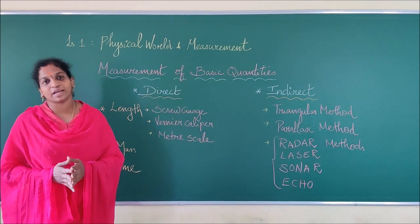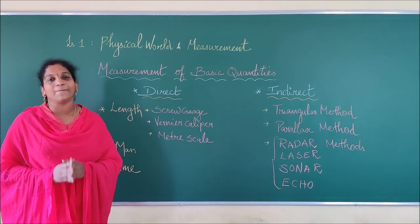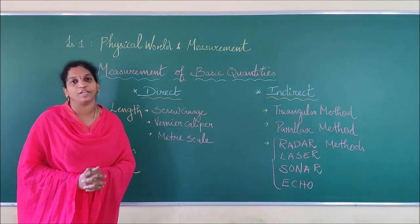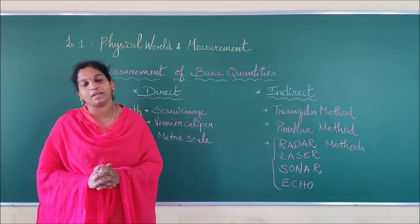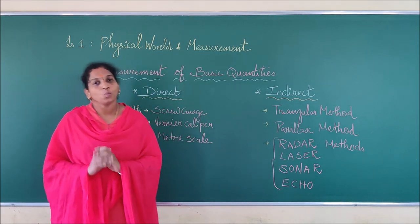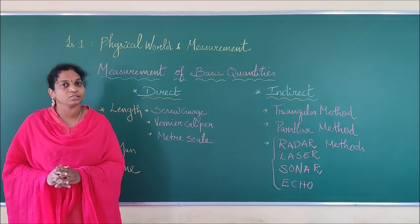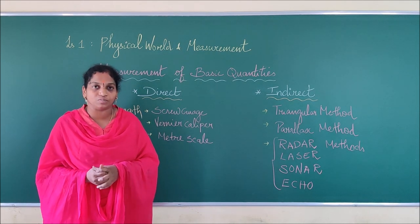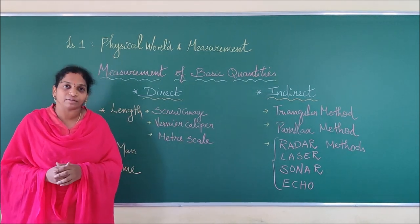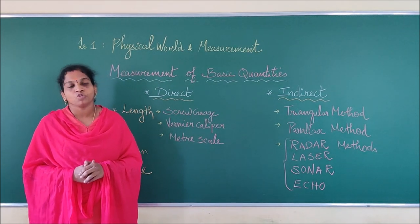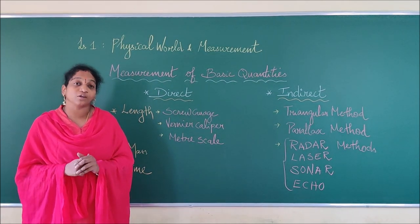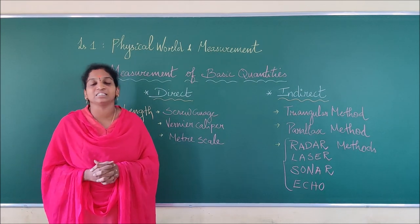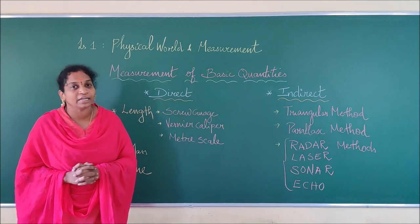In the last video we studied about the measurement of basic qualities, and we also studied that in measurement we have two types: direct measurement and indirect measurement. Direct measurement means something which can be measured directly using instruments. Indirect measurement means something which cannot be measured directly.